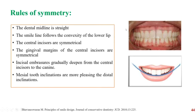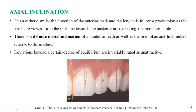Coming on to the rules of symmetry: the dental midline should be kept straight, the smile line should follow the convexity of the lower lip, and horizontal symmetry should be maintained in the size and gingival margin of the central incisors. The gingival embrasures gradually deepen from the central incisors to the canine, and mesial inclinations are more pleasing than distal inclinations. Coming on to axial inclination: in an aesthetic smile, the direction of the anterior teeth and their long axes show a gradual progression, with a gradual increase in axial inclination as you move from the central incisor to the canine.